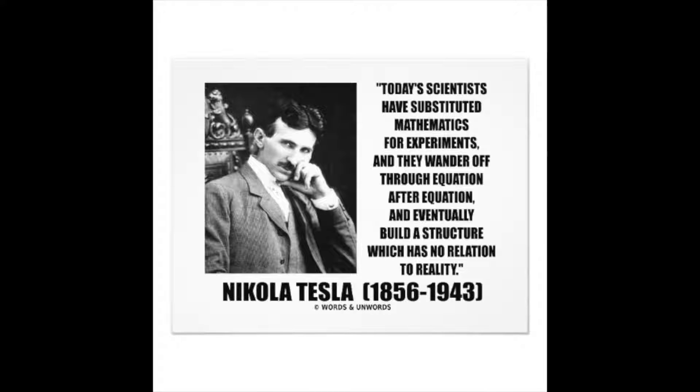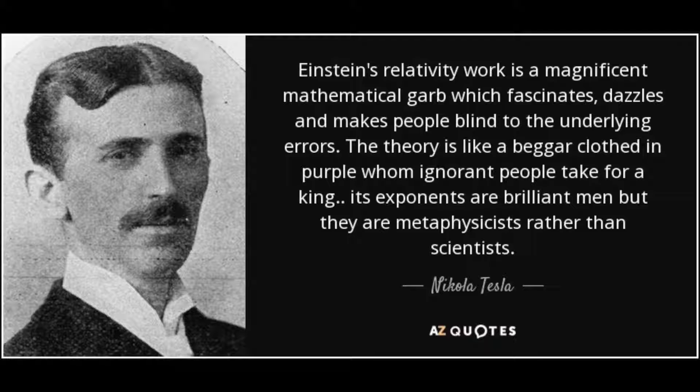He tells me, today's scientists have substituted mathematics for experiments. And they wander off through equation after equation, and eventually build a structure which has no relation to reality. I mean, how true could that statement be? Nikola Tesla is the true genius. He says Einstein's relativity work is a magnificent mathematical garb, which fascinates, dazzles, and makes people blind to the underlying errors. The theory is like a beggar, clothed in purple, whom ignorant people take for a king. Its exponents are brilliant men, but they are metaphysicists rather than scientists.